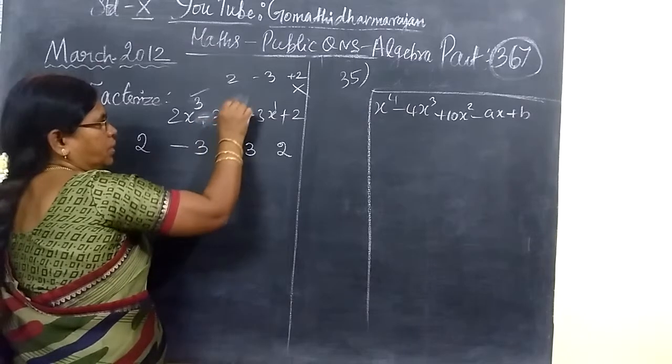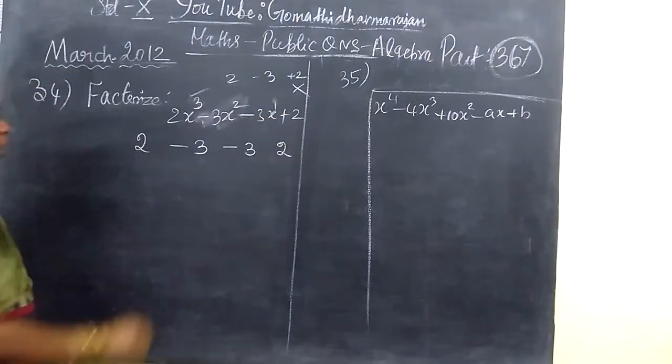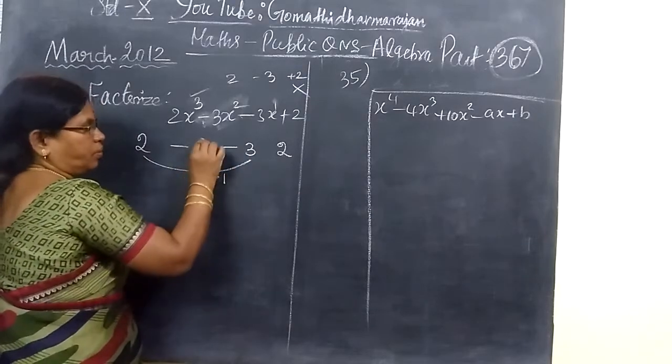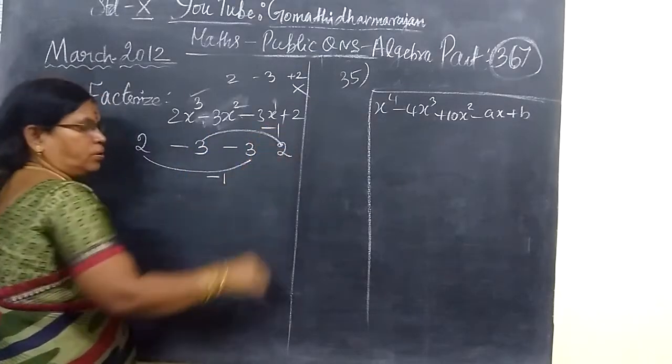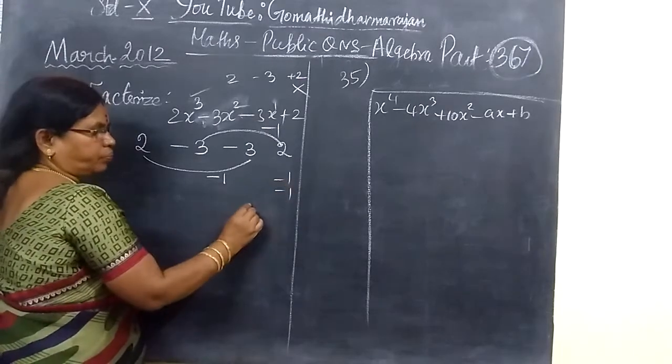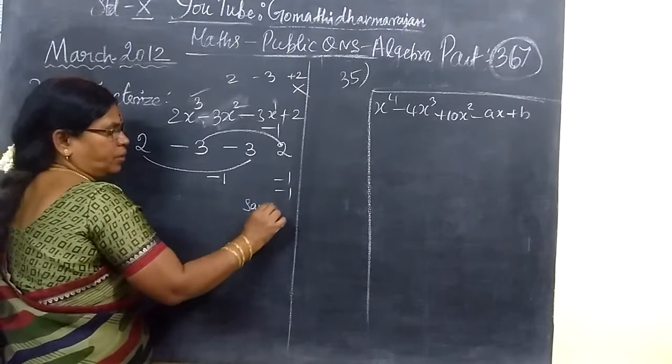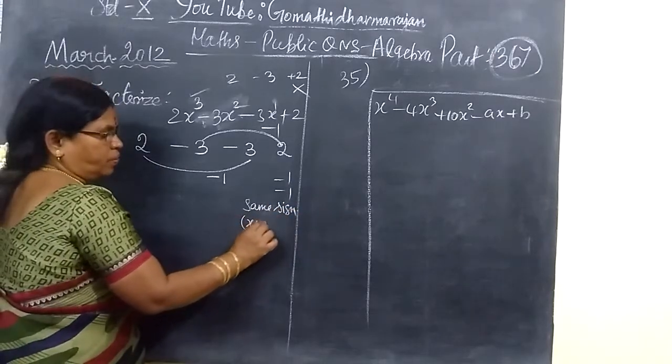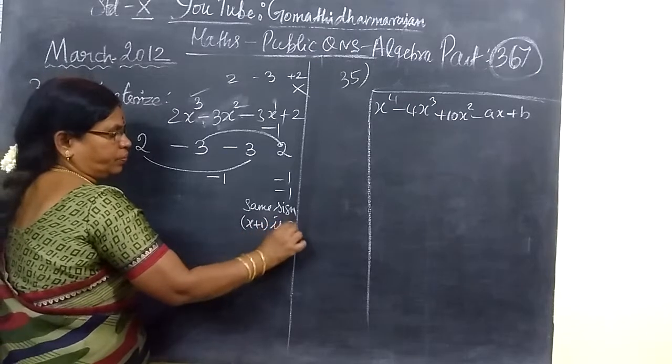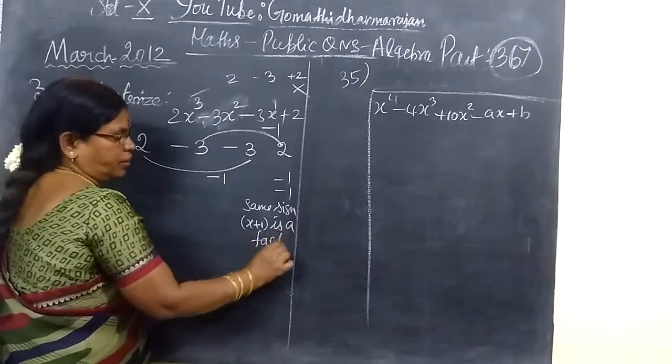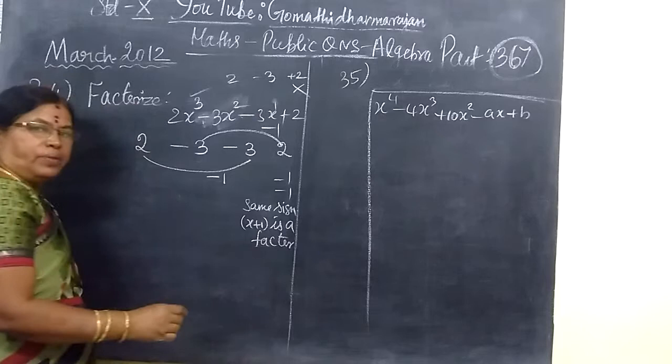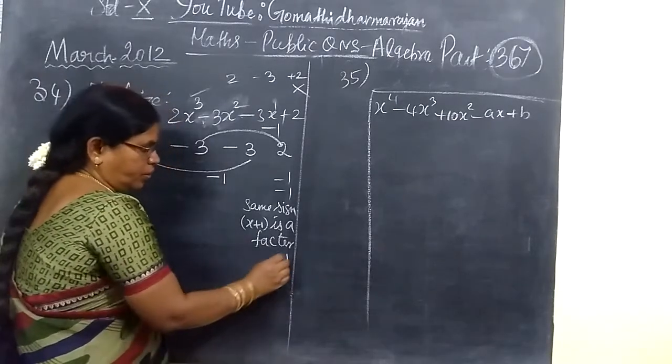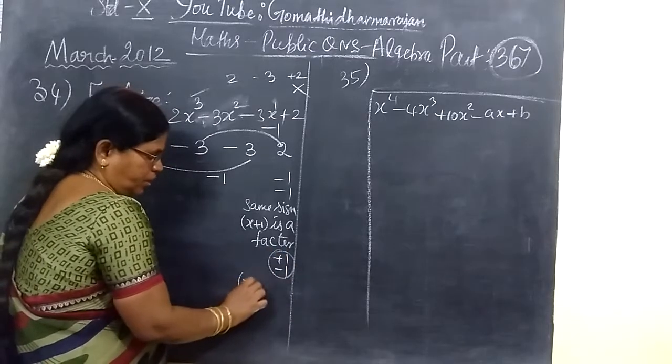You have 2x³ - 3x² - 3x + 2. If alternative way: 2 minus 3 minus 1, minus 3 plus 2 minus 1. So same sign, plus plus or minus minus 1, x plus 1 is a factor. Opposite sign, x minus 1 is a factor.